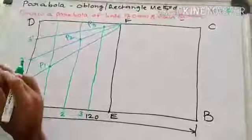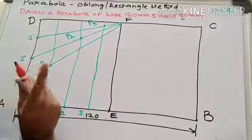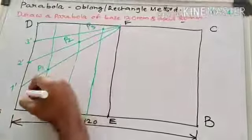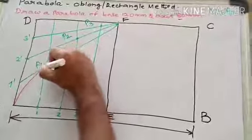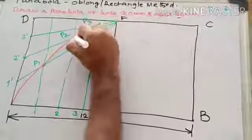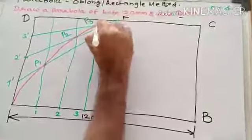Now, you have to join all those constant points. A, P1. P1, P2. P2, P3. P3 to F.